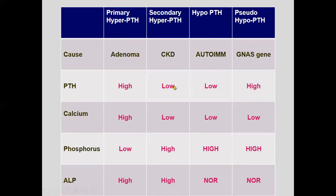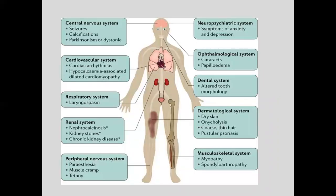These four conditions must be kept in mind. Using this comparative chart, you can easily identify which parameter will be high and how to approach a patient with hyperparathyroidism, secondary hyperparathyroidism, hypoparathyroidism, or hypocalcemia, which we will discuss later.